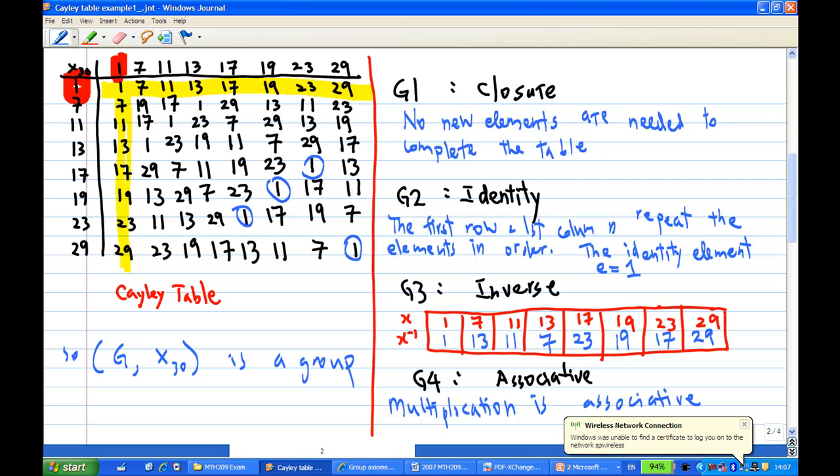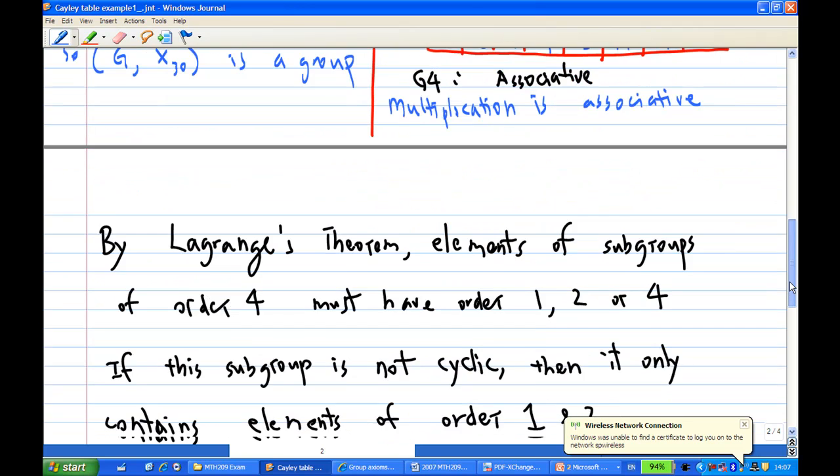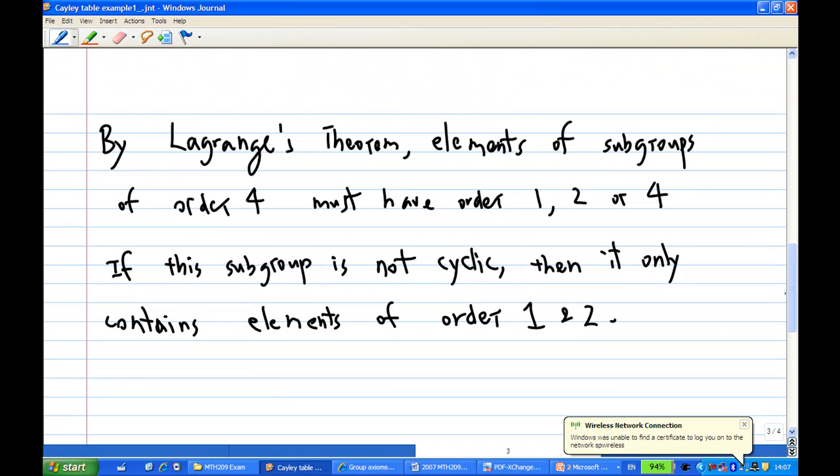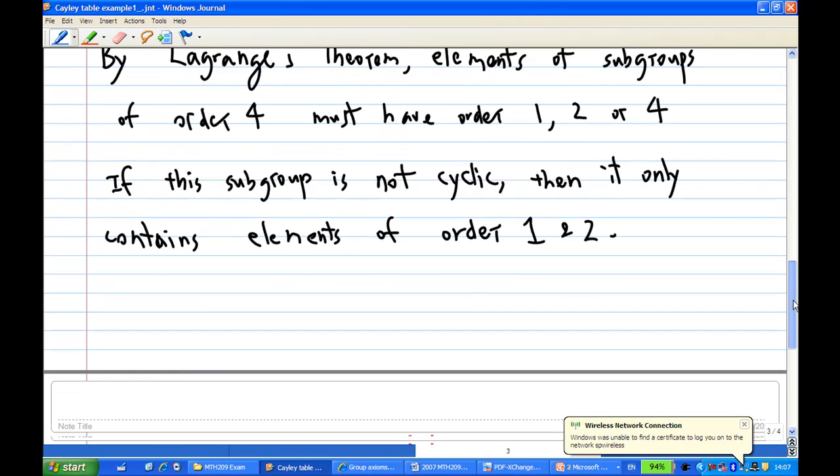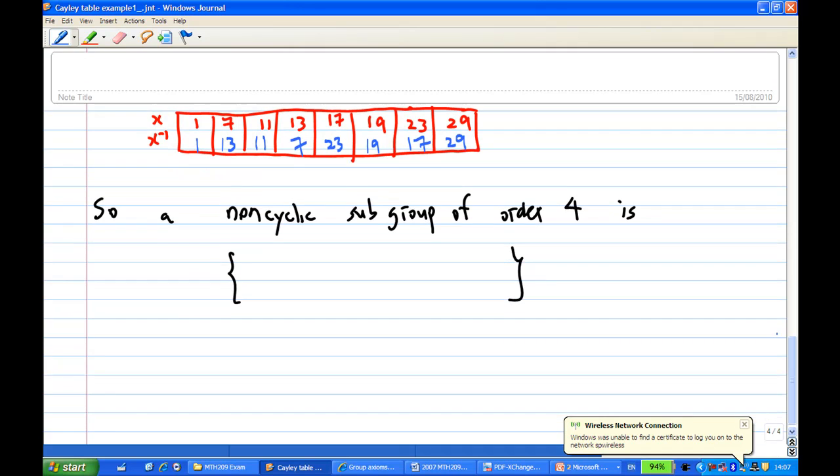We're going to find a subgroup of this G here of order 4 which is non-cyclic. Now by the Lagrange theorem, elements of subgroup of order 4 must have order 1, 2, or 4. If this subgroup is not cyclic, then it only contains elements of order 1 and 2. So we can collect elements of order 1 and 2. The elements of order 1 and 2 are: 1 times 1 is still 1, and 11 times 11, so 11 is order 2 because 11 times 11 is 1, and 19 times 19 is also 1, so 19 is order 2.